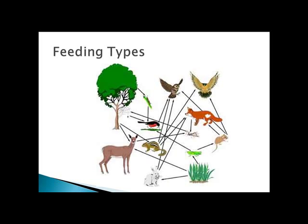There are different kinds of feeding types in ecosystems. Autotrophs are so-called producers because they make their own food — those would be plants, algae, cyanobacteria, etc. Heterotrophs come in a couple of different flavors: carnivores, which eat only meat; omnivores, which eat both meat and plants; herbivores, which eat only plants; and decomposers, or detritivores, which eat dead stuff.